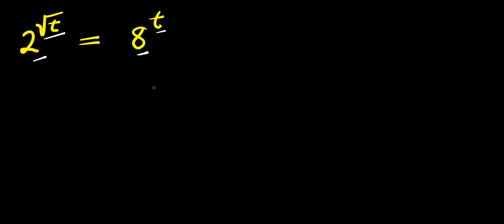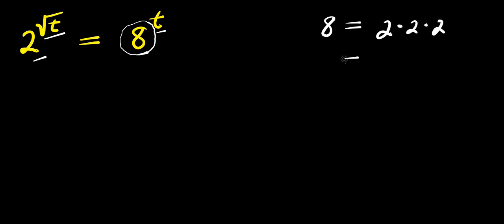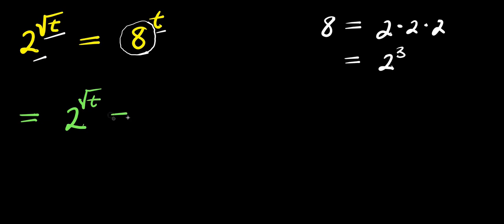We are going to start by replacing this 8 with 2 to the power of 3. We have 8 equals 2 times 2 times 2, that means 8 equals 2 to the power of 3. So we are simply going to have 2 to the power of root t equals 2 to the power of 3, raised to the power of t.